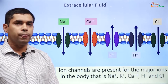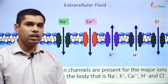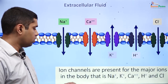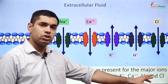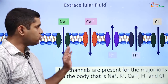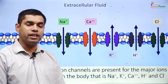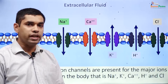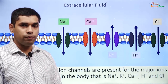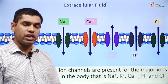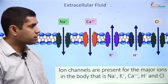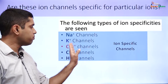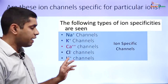Ion channels in the body are present for all major ions. The major ions we see in the body are sodium, potassium, calcium, protons, and chloride, and each of them has a specific ion channel. When we look at the specificity of the channel, the first type are ion-specific channels — we have ion-specific channels for sodium, potassium, calcium, chloride, and protons.